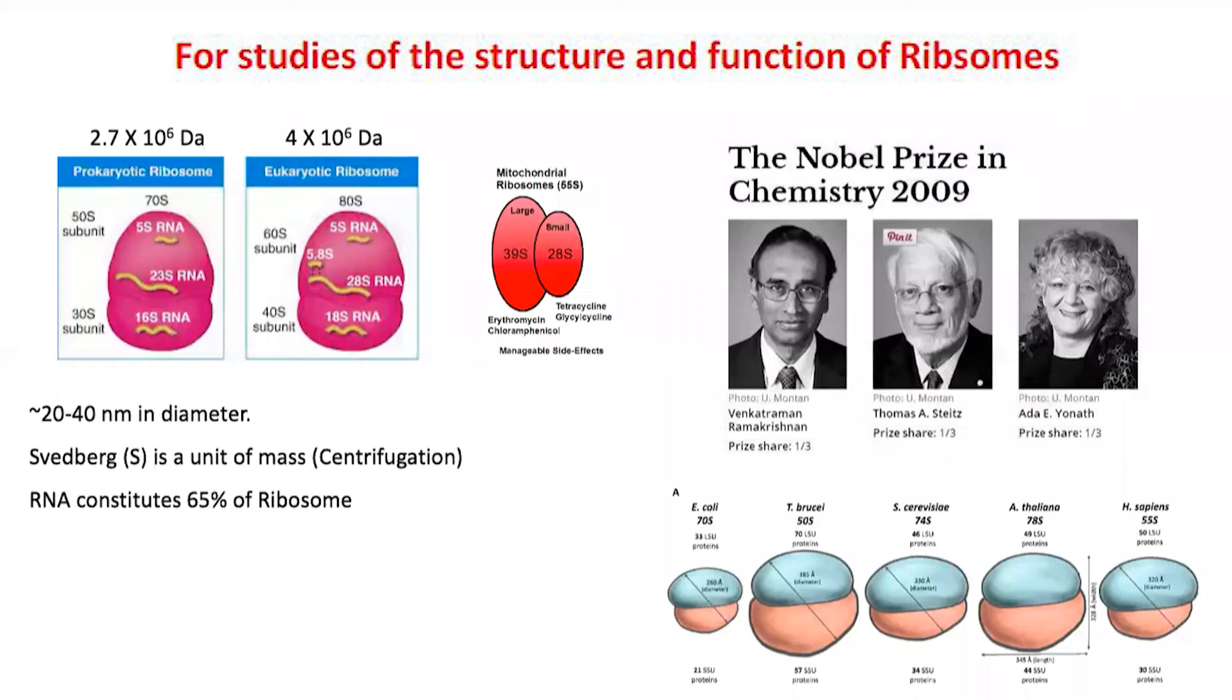Basically, antibiotics we use, like tetracycline, target the ribosome to kill bacteria inside our body. This slide shows there is sometimes a weak effect of tetracycline on mitochondrial ribosomes, which can have side effects since we all have mitochondria in our cells. However, these side effects are manageable.